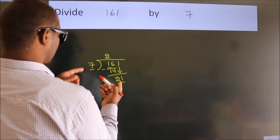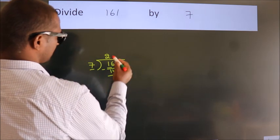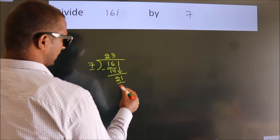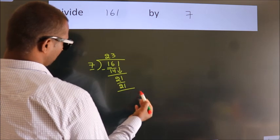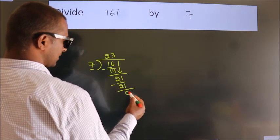When do we get 21? In the 7 table. 7 threes, 21. Now we subtract. We get 0.